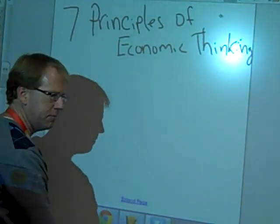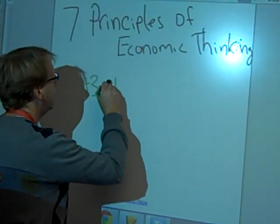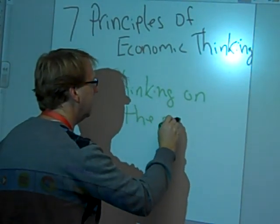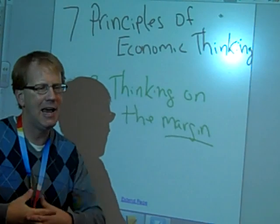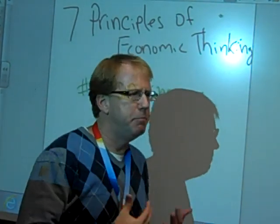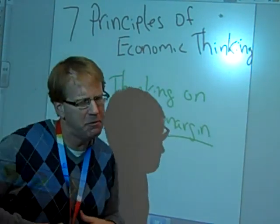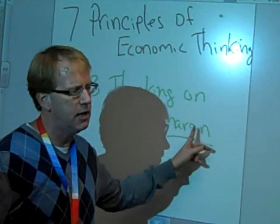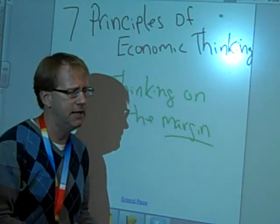Our third principle is thinking on the margin. We're always making decisions based on how much extra benefit we're going to get from doing more of something. When you're eating pizza, the best slice is probably the first one. But we have a second because we're still getting some benefit — still hungry, still tastes good. We might eat a third, fourth, or fifth piece, but at some point we won't get enough benefit from adding another slice, so we stop. That's thinking on the margin.